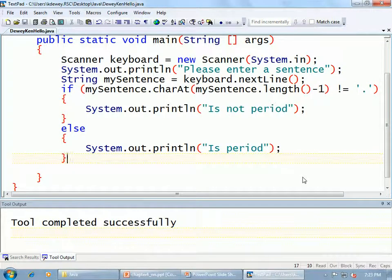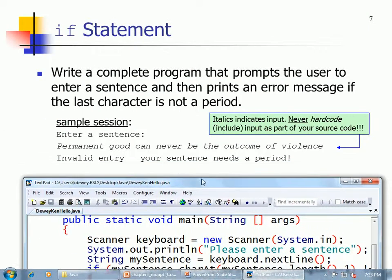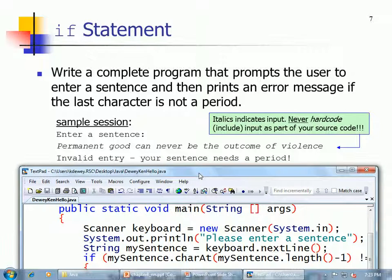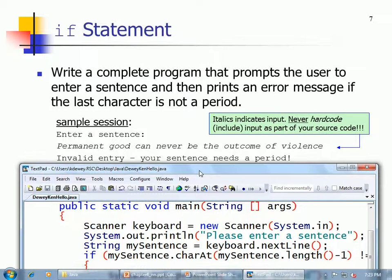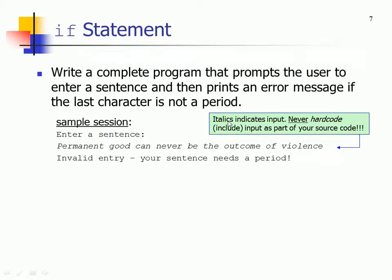Let's test it again. With a space at the end — this is not a period, which is correct. Without a space — it's a period. It works great. So did we meet the requirements? The output message should probably say something like 'Invalid — your sentence needs a period.' The note says italics indicate input; never hard-code input as part of your source code.